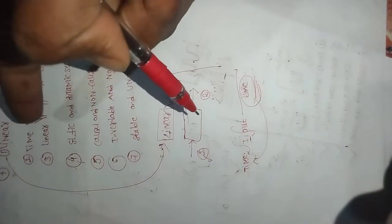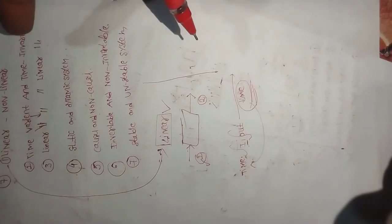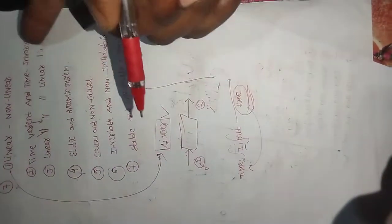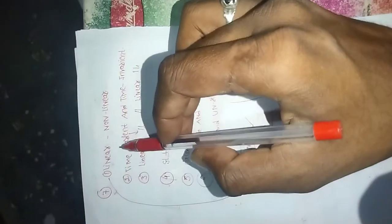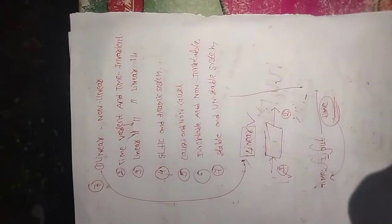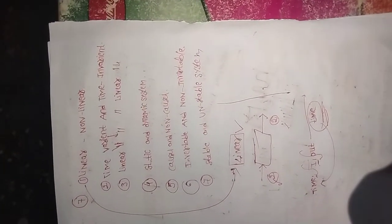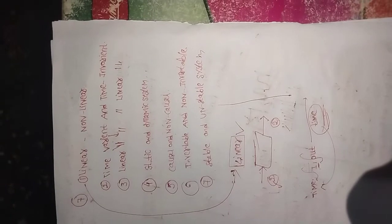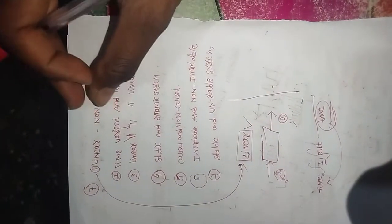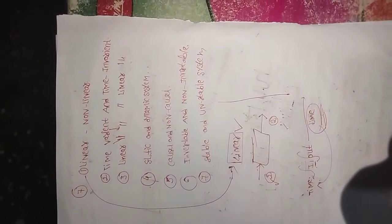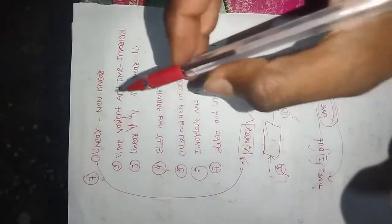A linear time invariant system is one that is linear and does not vary with time. For a linear system, the superposition theorem is satisfied. For a nonlinear system, the output does not vary proportionally with input - the superposition theorem does not hold for a nonlinear system.